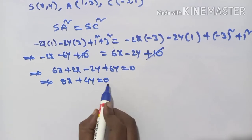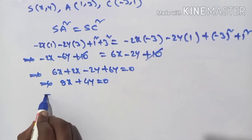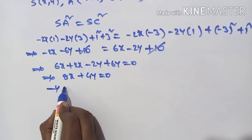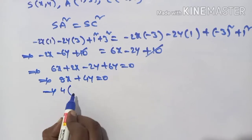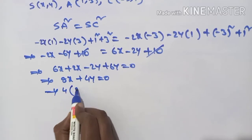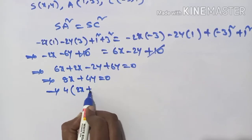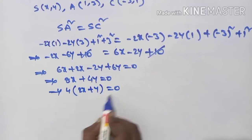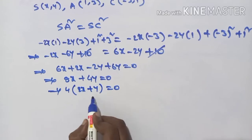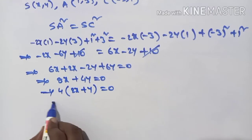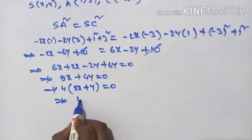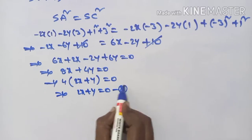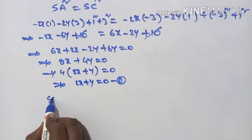Here 4 is common, so dividing through: 2x + y = 0. This is equation number 2.